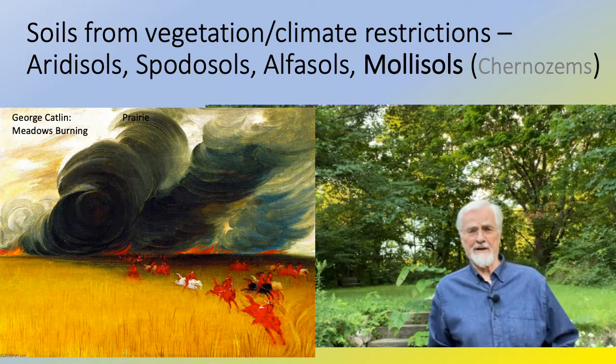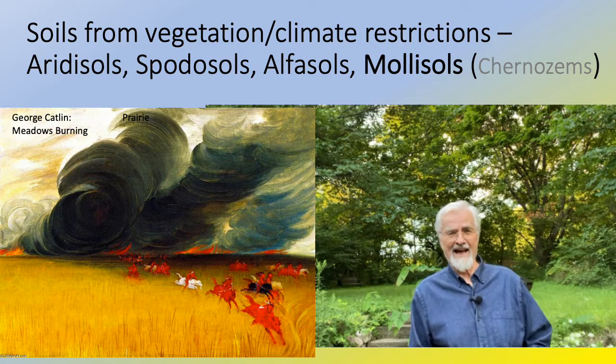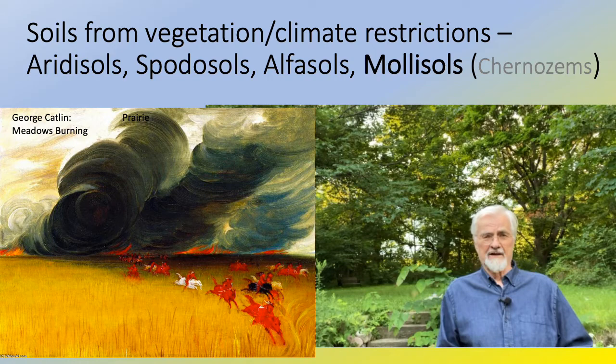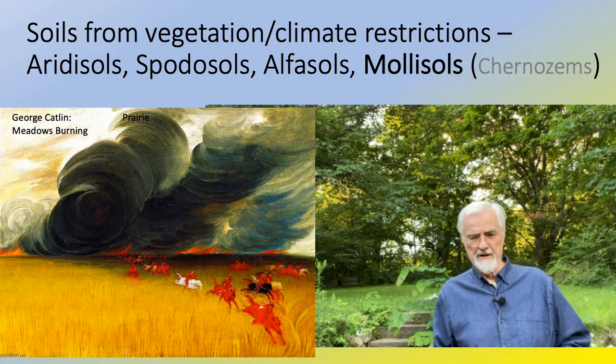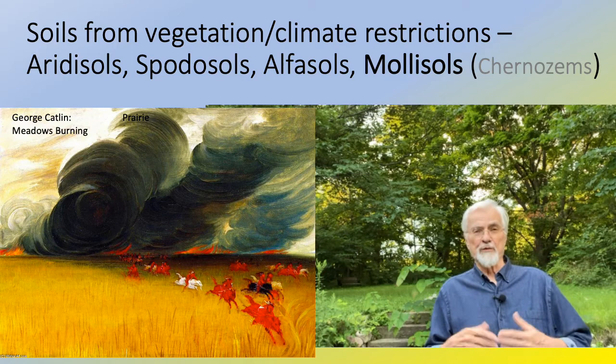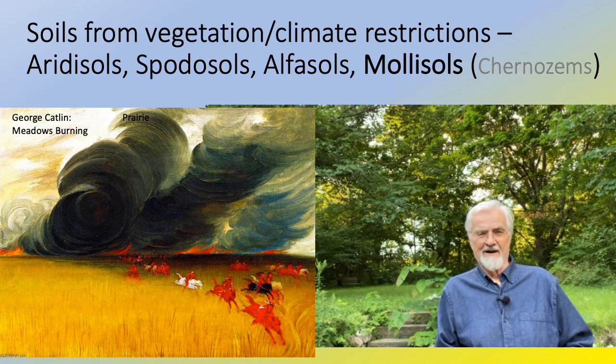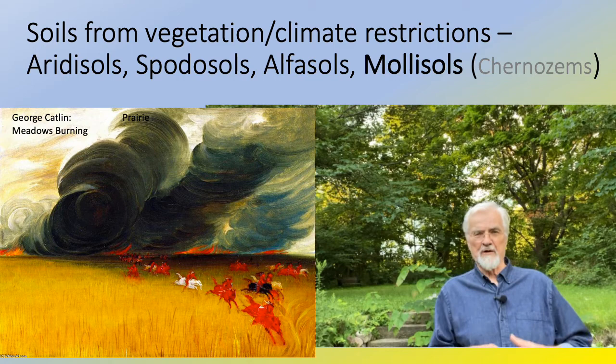Mollisols are the major agricultural soils for commercial agriculture — called chernozem in Russia. They are classically the soils of prairies. A defining feature is that prairies burn on a regular basis, and as they burn, all that organic matter is incorporated into the soil.